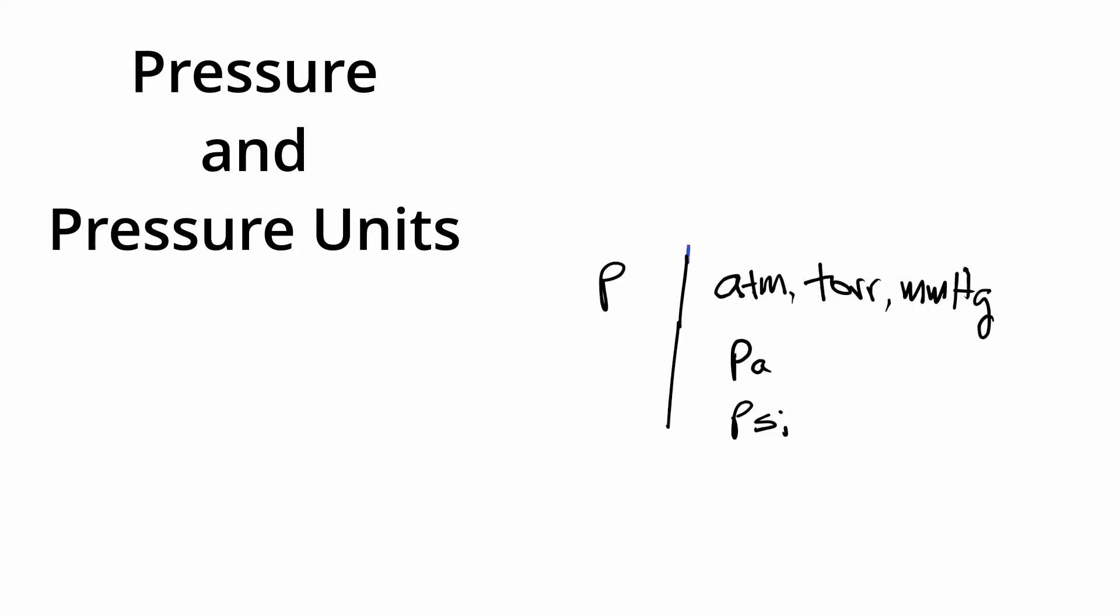One that's really, really common is one atmosphere. Now, one atmosphere is the equivalent to 760 torr. But lucky for you, it's also the equivalent of 760 mmHg.